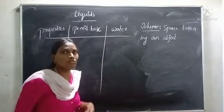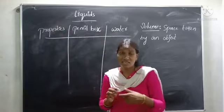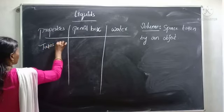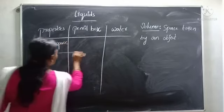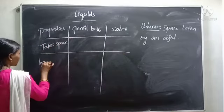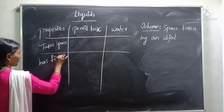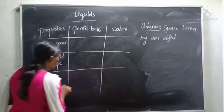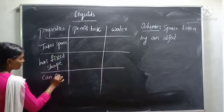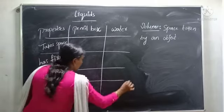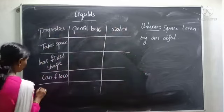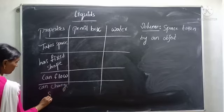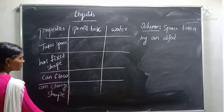First you can see the properties. What are the common properties that we can see in gases, liquids, and solids? They take up some space, have a shape, some cannot flow, and some can change their shape. These are the sub-properties.